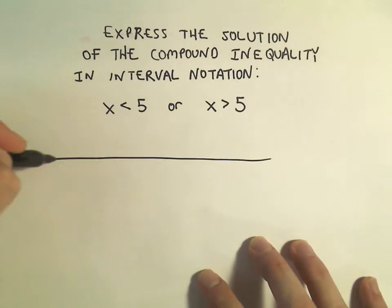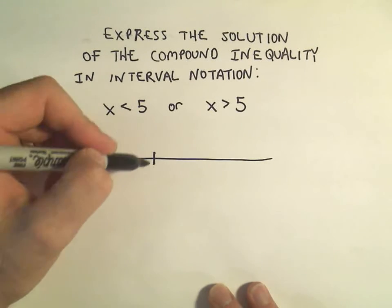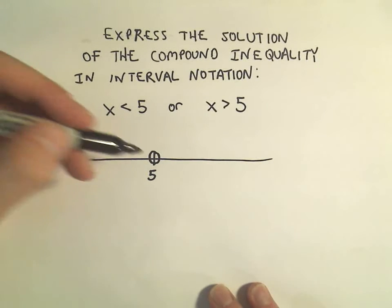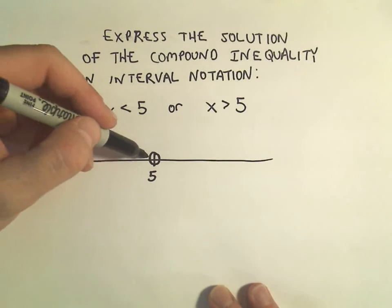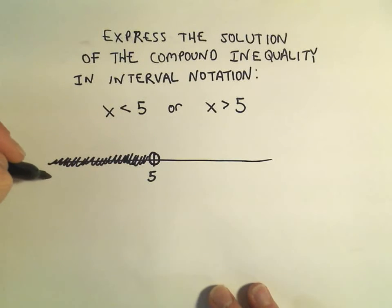So again, when I think about 'or,' I'm going to use everything that I shade. It says x has to be less than 5, so I'm going to put an open circle there because we don't use it. Everything less than 5 would be everything to the left, all the way out to negative infinity.